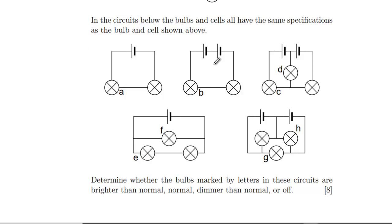We started with one cell and one bulb. We've now added in a second bulb, and it can be useful to think about what's changed each time you move from one circuit to another — it can be easier to see what's going on. In this case, bulb A is going to get half the potential difference, so it's going to be dimmer because it's sharing the potential with the other bulb.